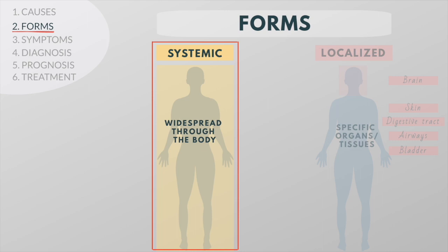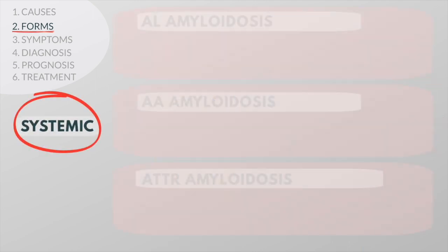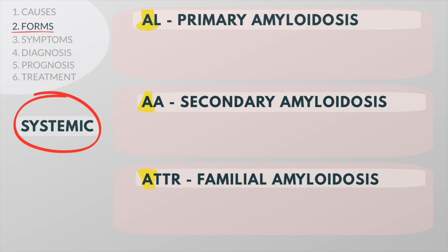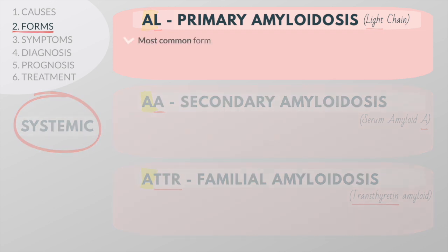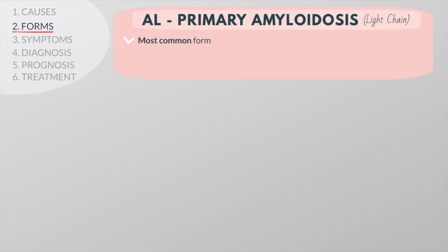In the rest of this video we will mainly focus on the symptoms, diagnosis, and treatment of systemic amyloidosis. The different types are named according to the type of amyloid protein that is produced. They all begin with the letter A, which stands for amyloidosis, followed by one or more letters identifying the particular amyloid protein. The most common types are AL (primary), AA (secondary), and ATTR (familial) amyloidosis.